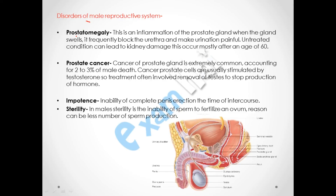Now we will discuss disorders of the male reproductive system. The first is prostatomegaly, which is inflammation of the prostate gland. When the gland swells up it frequently blocks the urethra and makes urination painful. If untreated, it can lead to kidney damage and occurs mostly at age 60 and above. The second is prostate cancer, which accounts for two to three percent of male cancer deaths. Cancer cells in the prostate are usually stimulated by testosterone, so treatment involves removal of the testes to stop testosterone production.